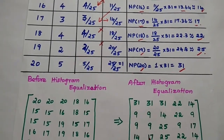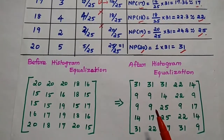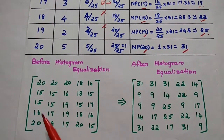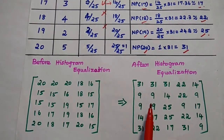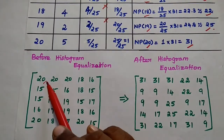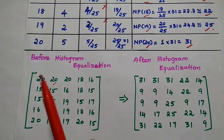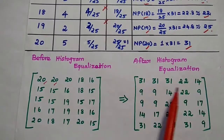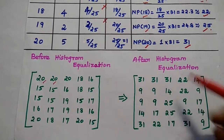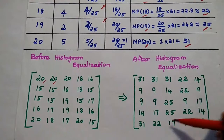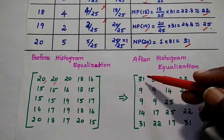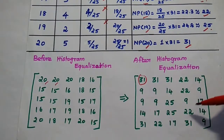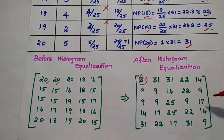So what we have done is simply stretch out the intensity levels. Before histogram equalization we had the original image segment, but after equalization, the values are replaced: 15→9, 16→14, 17→17, 18→22, 19→25, 20→31. Now all the gray levels span from 9 to 31, and the maximum level is 31, spreading intensity values across the entire image segment to enhance it.